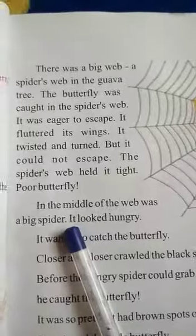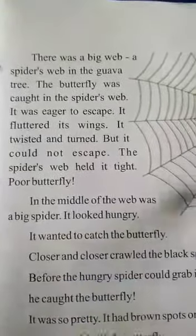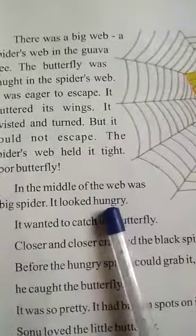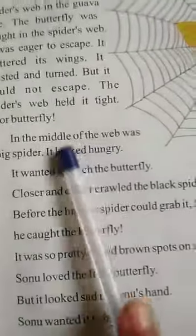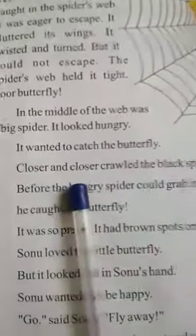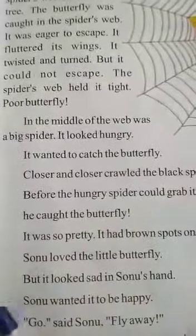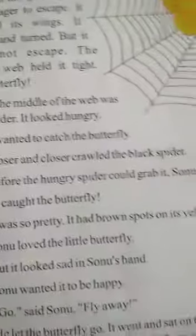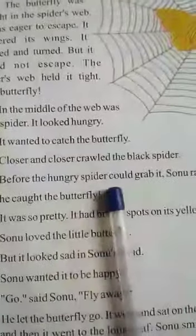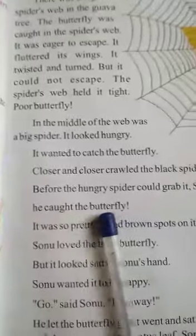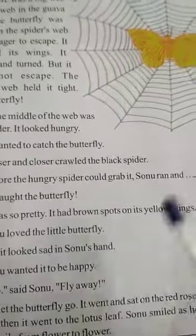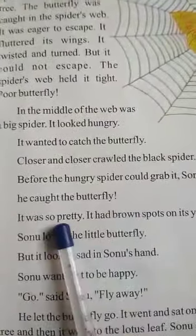In the middle of the web was a big spider. It looked hungry. और वो मकड़ी के जाले के बीच में एक big spider था, और वो देखने से बहुत ही भूखा लग रहा था. It wanted to catch the butterfly. Closer and closer crawled the black spider. वो धीमे-धीमे से crawl करता हुआ butterfly की तरफ आ रहा था. Crawl means धीमे-धीमे से आना. Before the hungry spider could grab it, Sonu ran and he caught the butterfly. और black spider के पकड़ने से पहले Sonu भागा और उसने butterfly को पकड़ लिया.